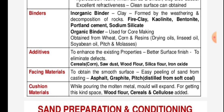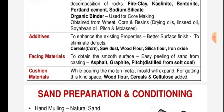Additives are used to enhance the existing properties, achieve better surface finish, and eliminate defects. Examples include cereals, corn, sawdust, wood flour, silica flour, and iron oxide. Facing materials are used to obtain a smooth surface and easy peeling off of sand from casting. These include asphalt, graphite, and pitch distilled from coal.